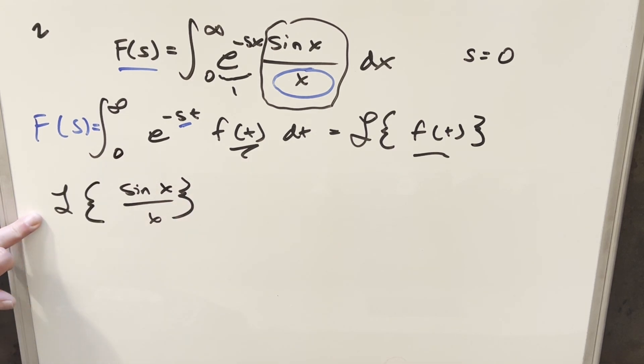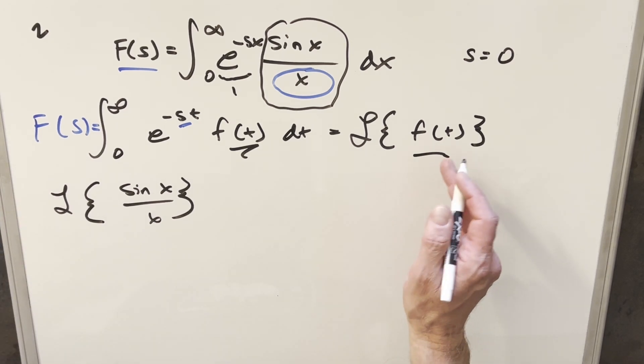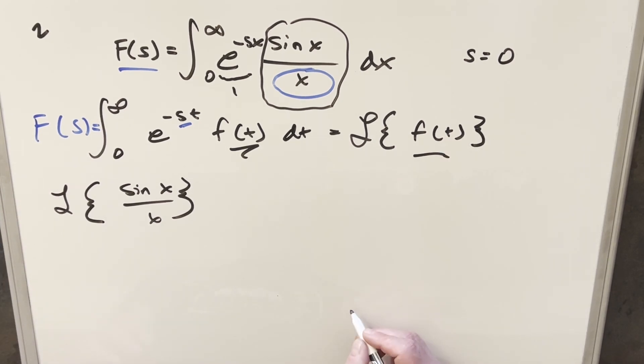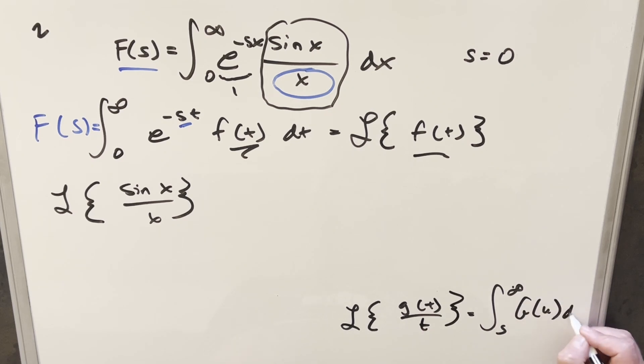But for a Laplace transform in this form, I did a video previously on this that you can check out as well, but we have a formula for this, and I'm just going to use a different letter because we use f here. So for this formula, we say if we have a Laplace transform, say g of t over t, then this is just going to be equal to the integral from s to infinity of big g of u, du.